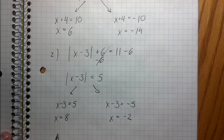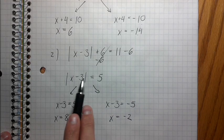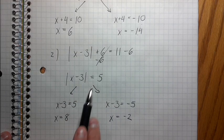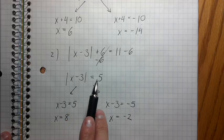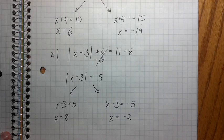So yeah, these are my two solutions. And again, I can check them. Eight minus three is five. Absolute value of five is five. Negative two minus three is negative five. Absolute value of negative five is five. Excellent, so it works.